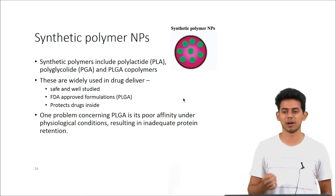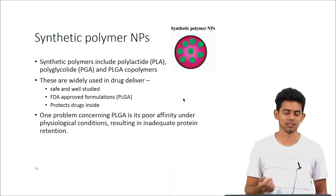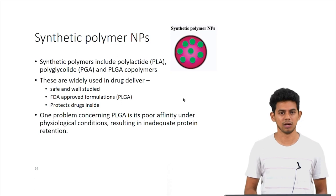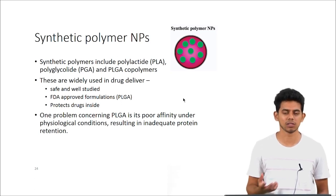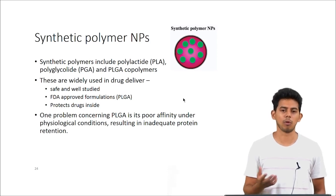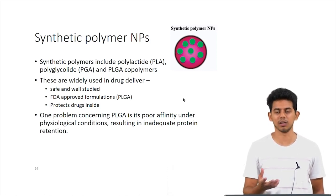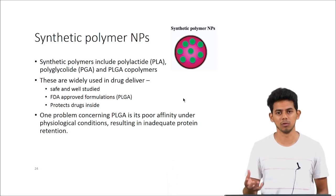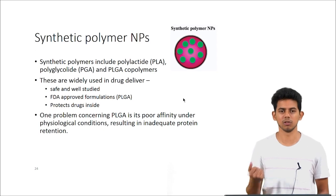The first nanoparticle-based system to look at is synthetic polymers. Synthetic polymers like PLA, PGA, and PLGA are widely studied in drug delivery. PLGA is FDA-approved and protects the drug inside. One problem with PLGA is its poor affinity to proteins under physiological conditions, meaning protein retention may be low and proteins can leach out in the physiological environment.